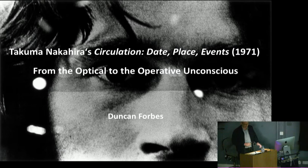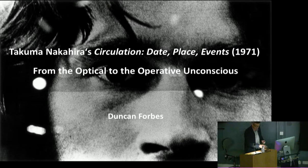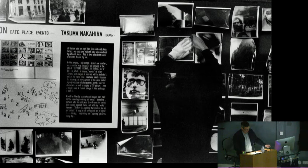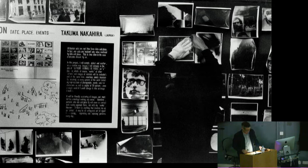Today I'm going to talk for about 45 minutes about Takuma Nakahira's work, Circulation: Date, Place, Events, a work that was installed at the Paris Biennale in 1971. I make no apologies for addressing a work that is now nearly 50 years old. I think it's an immensely significant artwork — one of the most important photo artworks of the early 1970s — and I think it has a lot to reveal to us.